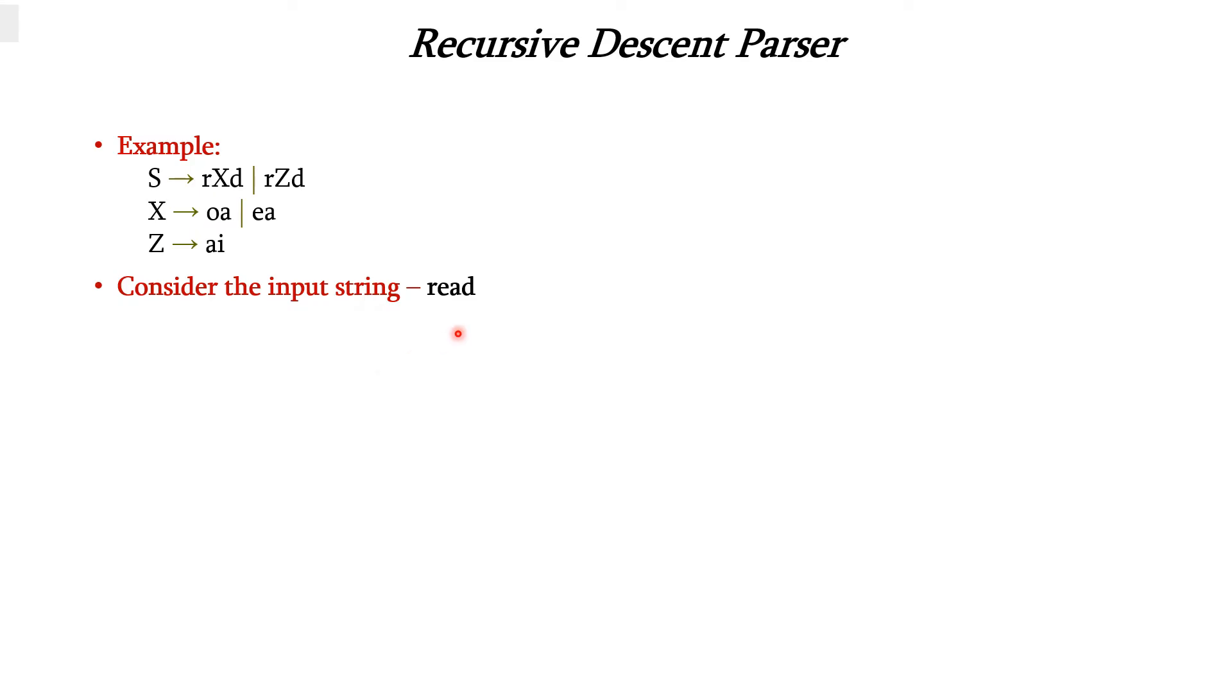Consider the given input string 'read'. We have to apply these production rules to get this input string using the recursive descent parser.